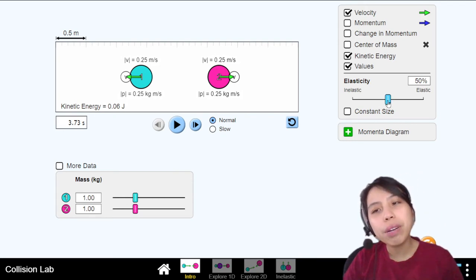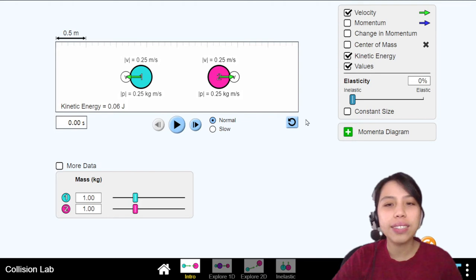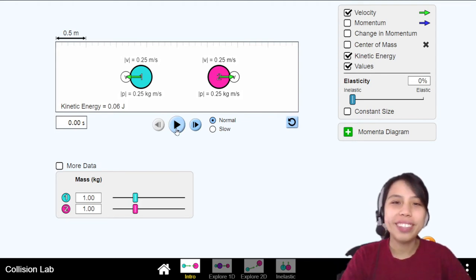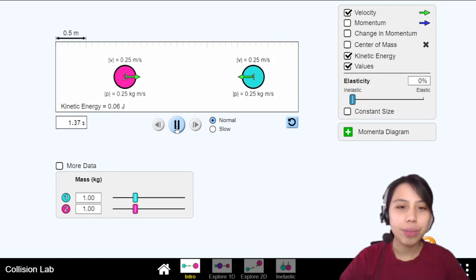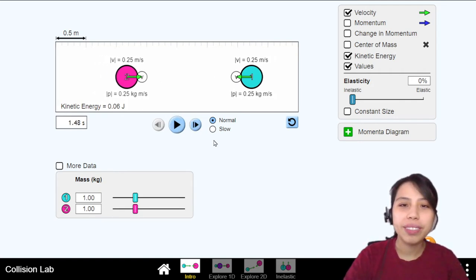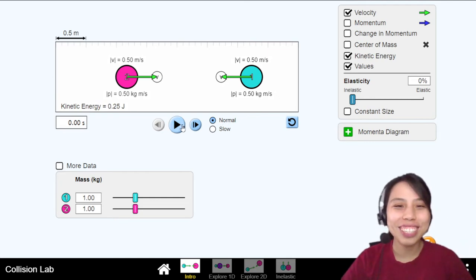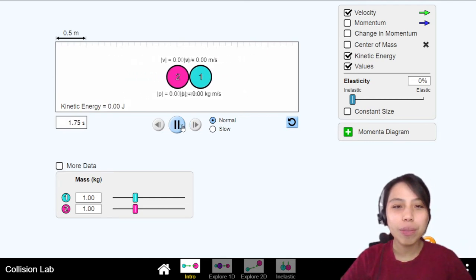Where did the energy go? I don't know. Maybe to sound, maybe the ball is squishy. Now I'm curious. What happens if I drag this slider all the way to inelastic? Perfectly inelastic. What do you think is going to happen? This is a very special case. Let's reset this first. Make them faster a bit. 0.25 at first. We make them collide.